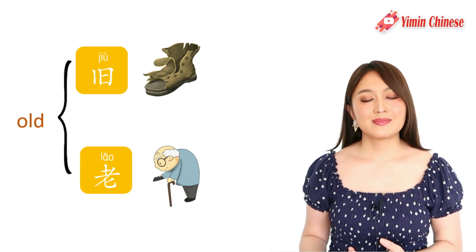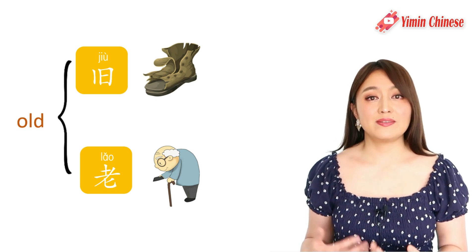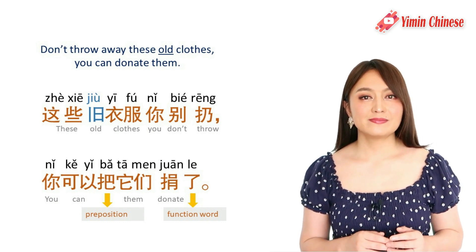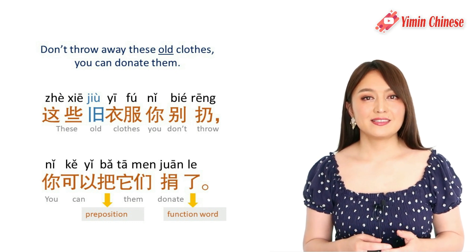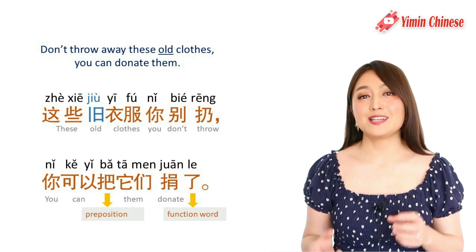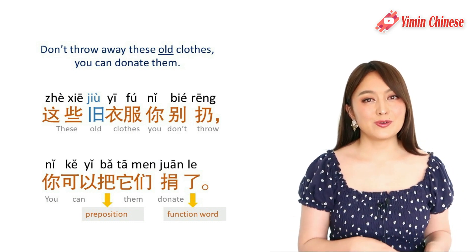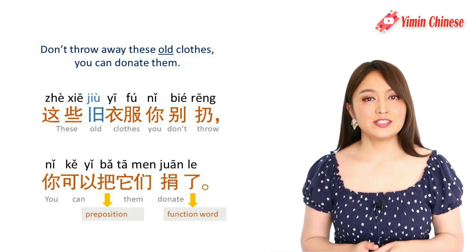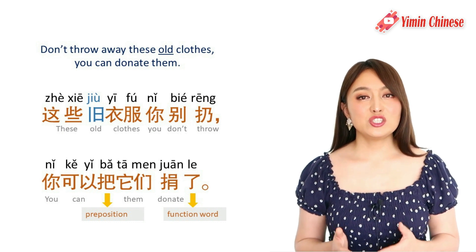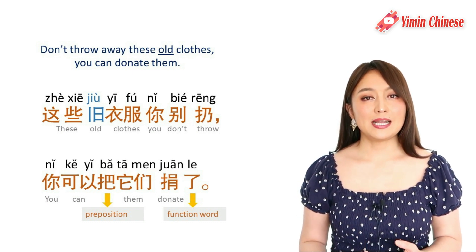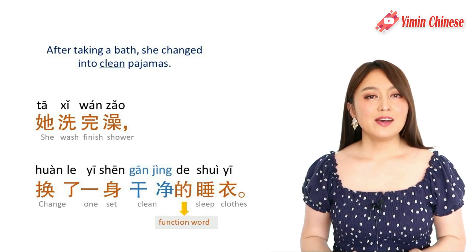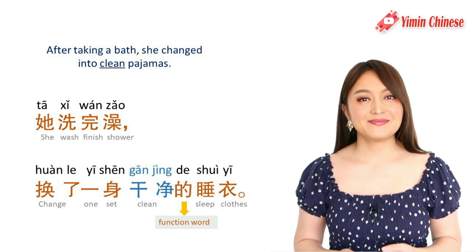And the opposite of new is 旧 — old. Note that 老 also means old, but it refers to age or time, whereas 旧 means already used — perhaps faded or broken. For example: 这些旧衣服，你别扔，你可以把它们捐了 — Do not throw away these old clothes; you can donate them.